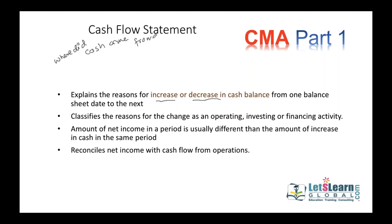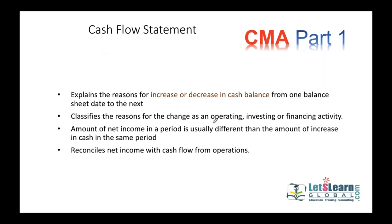We can find answers to these two questions — where did cash come from and where did cash go — through cash inflows and cash outflows. A cash flow statement is prepared in three sections: cash flows from operating activities, cash flows from investing activities, and cash flows from financing activities.